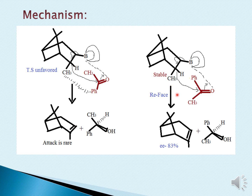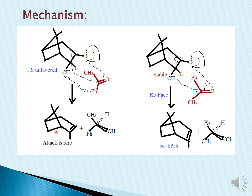For the unfavored transition state, the CH3 faces upward — this is the si-face, in the counter-clockwise (anti-clockwise) direction. There is a hydride attack on the carbonyl carbon, the carbon-oxygen bond shifts, and this moiety gets cleaved, resulting in two products. Remember: whenever there is a re-face in alpine borane, that is your major product with an enantiomeric excess of 83%. Whenever there is a si-face attack, you will get the minor product.